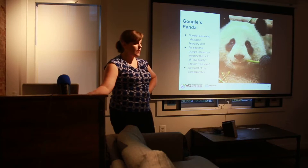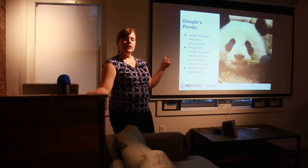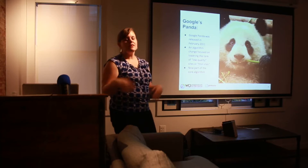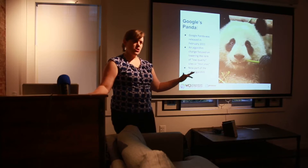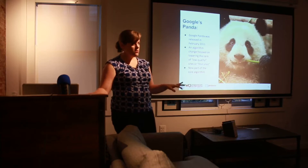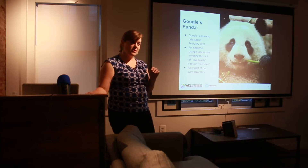Part of the reason the first algorithm update was named after a cute animal is because the engineer's last name was Panda. Then they thought it was cute, so they just kept naming them. The industry had named the big ones before, but then Google just decided to start naming them officially. Now they roll them out so frequently because of machine learning that there are no big blips — no named algorithm updates anymore, making it very hard to track.